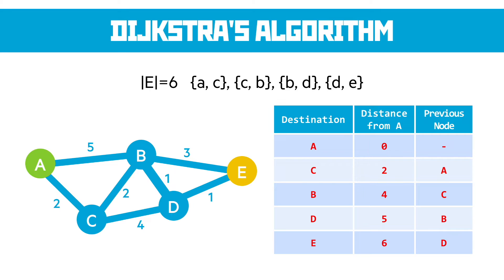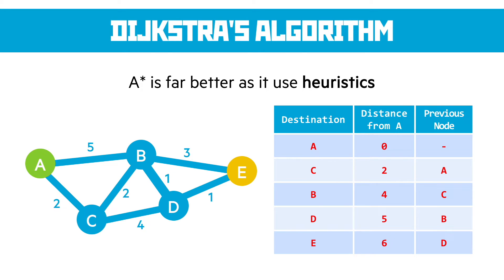Another algorithm used to find the shortest path is called A*. It is essentially Dijkstra's with an estimating value called the heuristic added to it, and it's far better and quicker for identifying the fastest route because it doesn't go back on itself. We won't cover that here, but it's worth a look if you're interested.